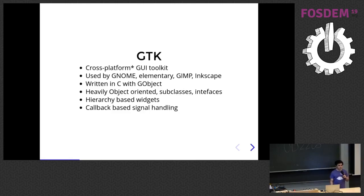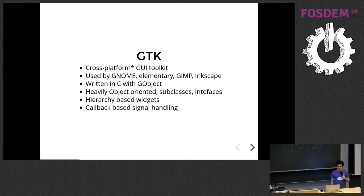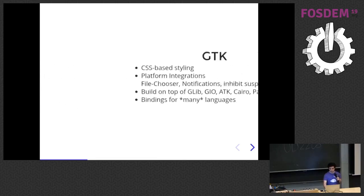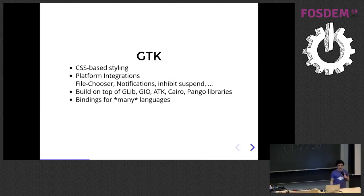GTK is a cross-platform graphical user interface toolkit. It's used by GNOME, Elementary, GIMP, and many popular applications. It's written in C with GObject. It's heavily object-oriented and uses subclasses and interfaces. It has hierarchy-based widgets and uses callbacks for signal handling. It also has a CSS styling engine.